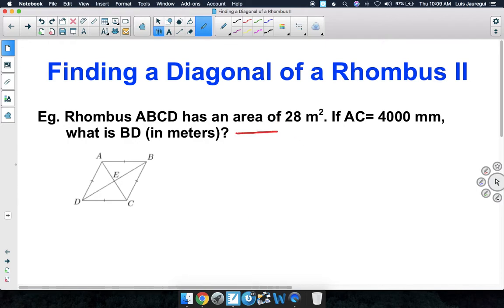Notice that we're provided with the area of the rhombus and the length AC, which is 4,000 millimeters. Notice that AC is this diagonal over here. So we know that the length of that diagonal is 4,000 millimeters.